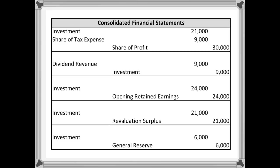The last two entries both increase the investment, because in both cases these equity accounts — the first one, revaluation surplus, and the second one, general reserve — have increased. In the case of the revaluation surplus, it increased by $70,000, with 30% of that being $21,000. For the general reserve, there was a prior year transfer — most likely from retained earnings — into the general reserve of $6,000. Those amounts get added to the investment account, and we credit those various equity accounts in each of those situations.